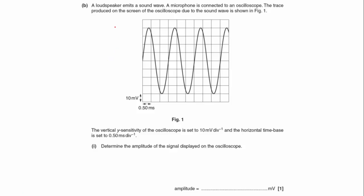Okay, part B. A loudspeaker emits a sound wave. A microphone is connected to an oscilloscope. The trace produced on the screen of the oscilloscope due to the sound wave is shown in figure one. The vertical Y sensitivity of the oscilloscope is set to 10 millivolts per division and the horizontal time base is set to 0.5 millisecond per division. Determine the amplitude of the signal displayed on the oscilloscope. The amplitude is defined as being the maximum displacement from the equilibrium position. So that would be the zero.